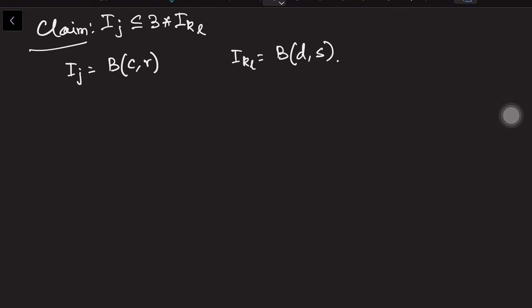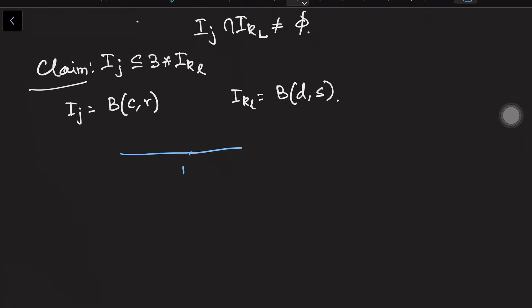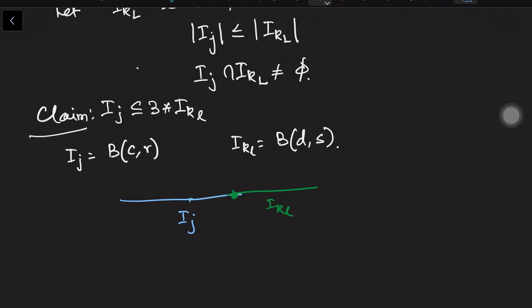So let us observe first few things. It is given that these two sets intersect. So i_j and i_kl intersect. And what is also given is that in terms of the length, this i_kl has bigger length and i_j has smaller length. This much information is given to us. That is same as saying your r is less than or equal to s because its length is bigger.